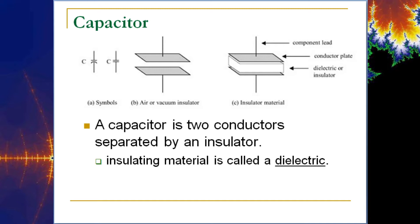We're starting to talk about components that are polarized, just like diodes. Diodes have an anode and a cathode; capacitors have a positive and a negative. The bent bar or curve is used to indicate the negative terminal of the capacitor if it's an electrolytic capacitor, and we'll talk about the different types shortly. That's the schematic symbol we use when we do our analysis.